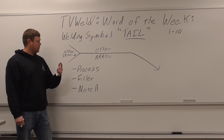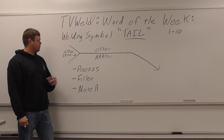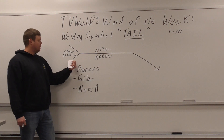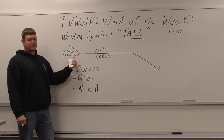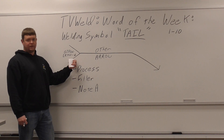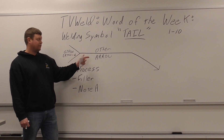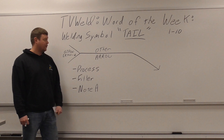There are three parts on a welding symbol: your reference line, your arrow, and then your tail. The tail doesn't necessarily have to be on there. If there's no specification that requires the tail, they just lose the tail and you'll just have the reference line and the arrow.